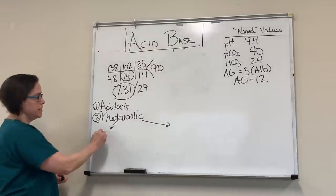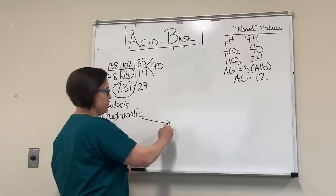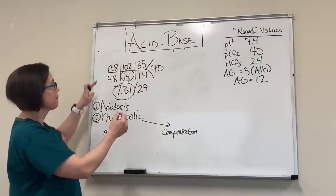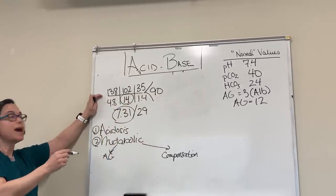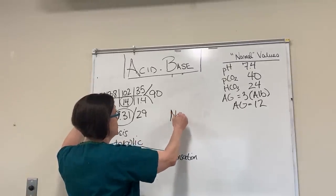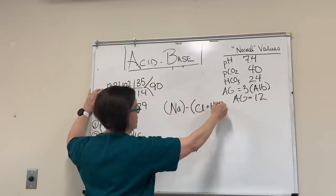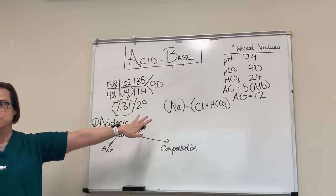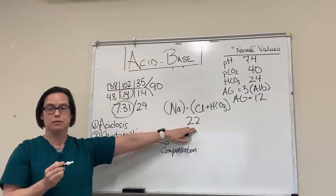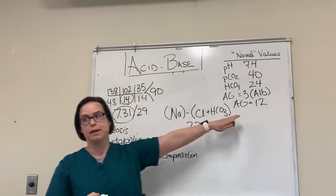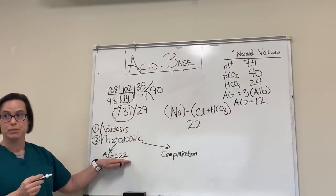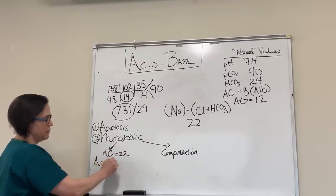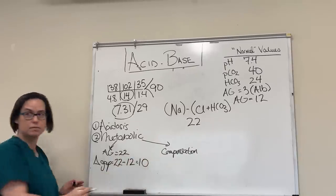Two things to do whenever we have metabolic acidosis: figure out our anion gap and figure out our compensation. Anion gap equals sodium minus chloride plus bicarb. Here: 138 minus 116 equals 22. So my anion gap is 22. A normal anion gap is 12, so I want to figure out the difference — I call that my delta gap. Delta gap equals 22 minus 12 equals 10.